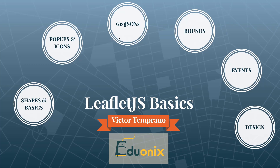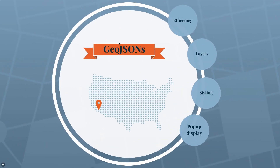One nice thing about GeoJSONs is they're quite efficient — not only in standardizing data across the internet, which makes moving data around more efficient, but also in their structure. They don't have a lot of extra fat in them. There can be a lot of properties attached to geographic data which can make them large, but in general they're stored in a pretty simple and efficient way.